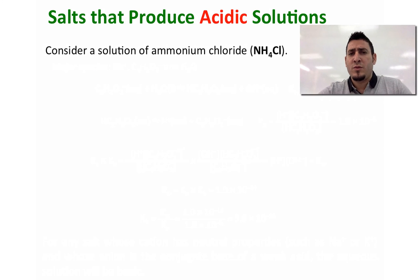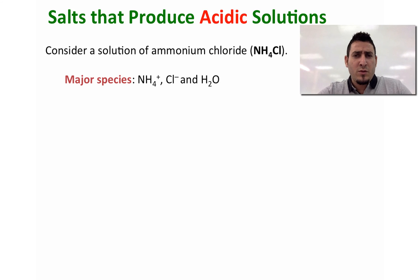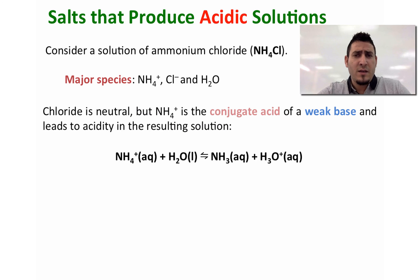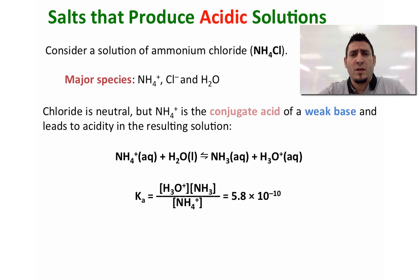Let's consider salts that will produce acidic solutions. Consider a solution of ammonium chloride, NH4Cl. The major species when ammonium chloride is dissolved in water are NH4+ (ammonium), chloride, and water. Now chloride is neutral, but NH4+ is the conjugate acid of a weak base — ammonia — and leads to acidity in the resulting solution. If we look at the equilibrium of NH4+ reacting with water, it produces ammonia plus H3O+. The equilibrium constant expression is Ka = [H3O+][NH3] / [NH4+]. The Ka of ammonium is equal to 5.8 × 10⁻¹⁰.